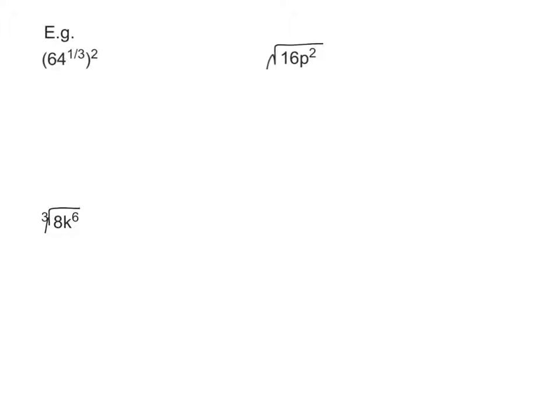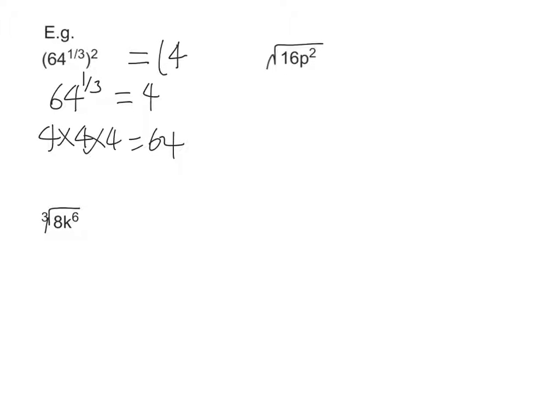In these questions we're simplifying expressions into their simplest form. There are brackets in the first one, so like all good mathematicians we'll do brackets first because BODMAS tells us we should. Inside the bracket it's 64 to the power of a third, which means the cube root of 64 — the number multiplied by itself three times to make 64 — and the answer is 4, because 4 times 4 times 4 equals 64. So we replace the bracket with 4 to the power 2, and 4 to the power 2 is 16.